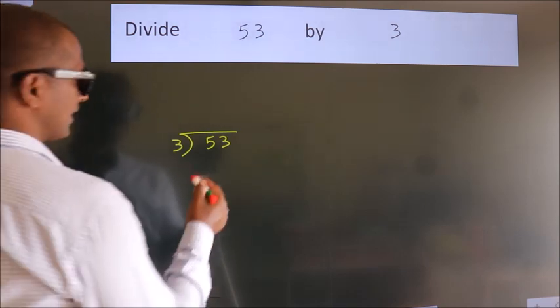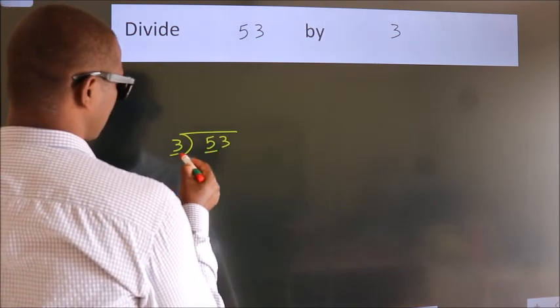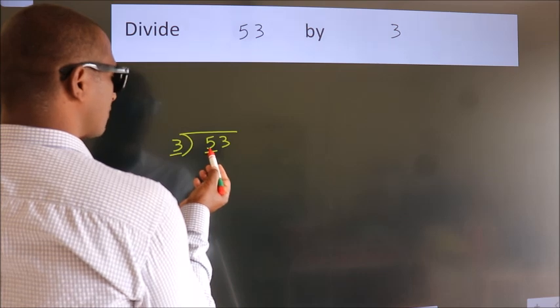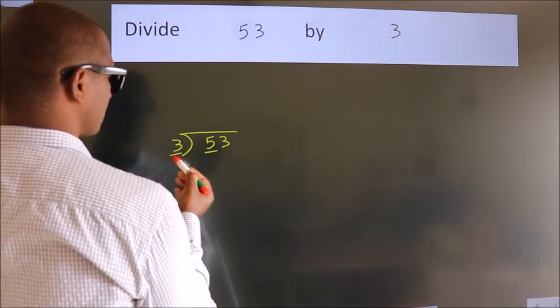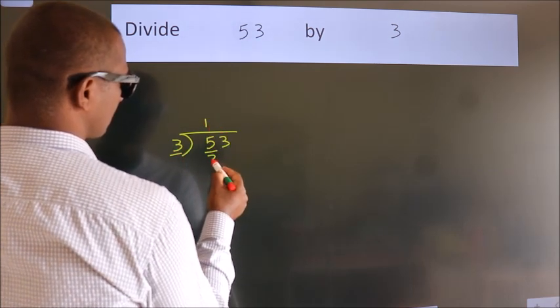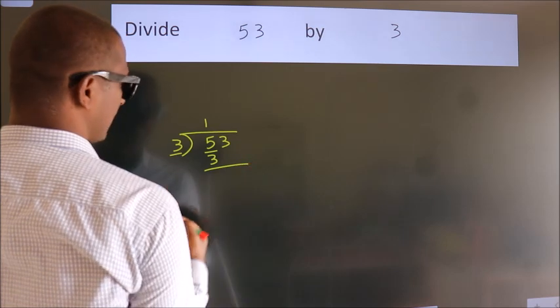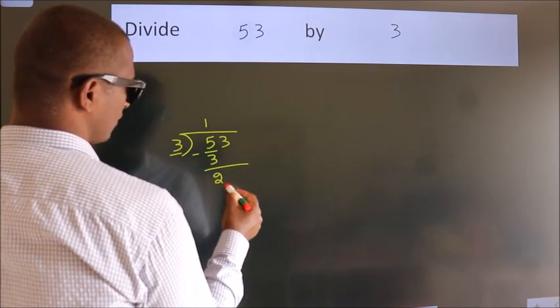Next. Here we have 5. Here 3. A number close to 5 in 3 table is 3 once 3. Now, we should subtract. We get 2.